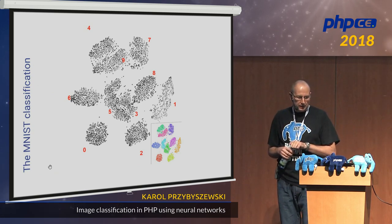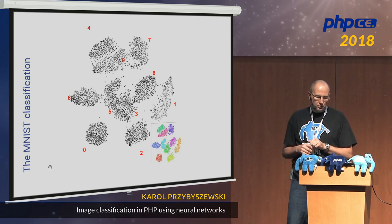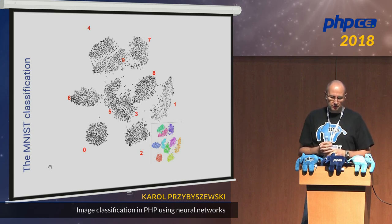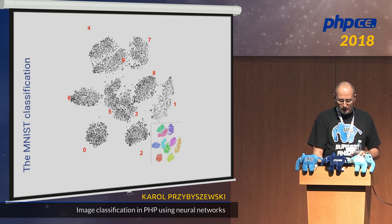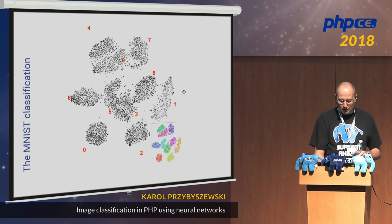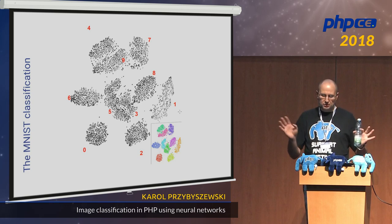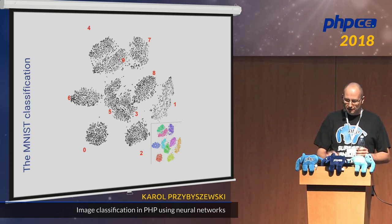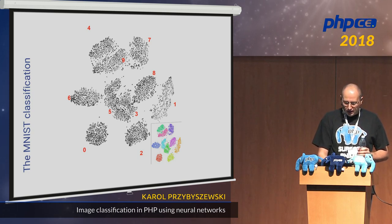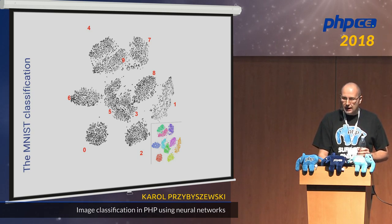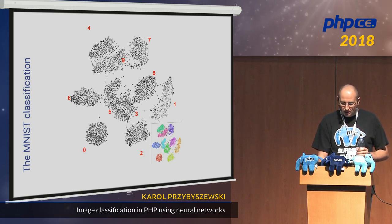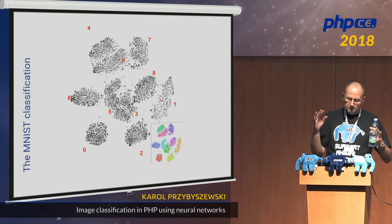The MNIST classification image shows all the images grouped together. For example, you have zeros here, twos here, ones here — they are clearly distinctive groups, you don't mix them. But have a look at fives and threes: it's not that easy to distinguish a handwritten five from a handwritten three. The same applies to four and nine — there is a lot of overlap in the common set.